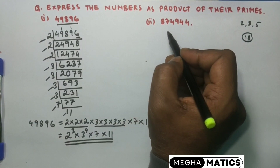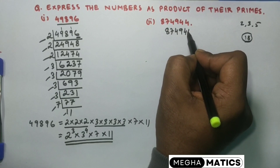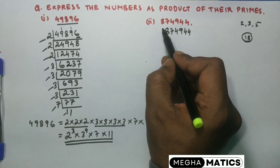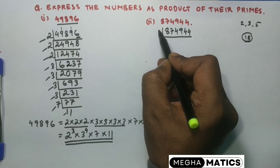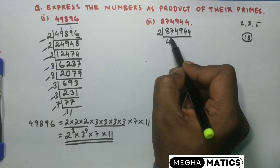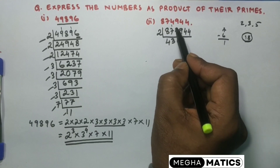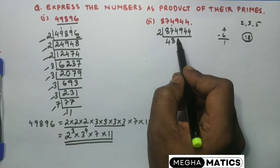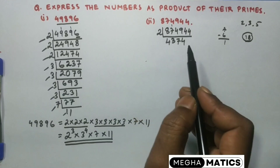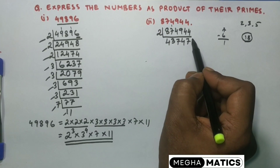In the same way, we have another number: 874,944. We'll find its prime factors too. Since the unit digit is 4, we start by dividing by 2. Dividing: we get 4 times on 8, then on 7 we get 3 times — 2 threes are 6 — so 7 minus 6 is 1, giving 14. Dividing 14 by 2 gives 7 times. Then 9 comes; dividing 9 by 2 gives 4 times, so 9 minus 8 is 1, giving 14 — 7 times with 2. Then 4 gives 2 times.